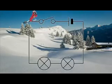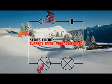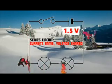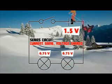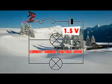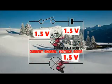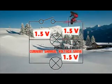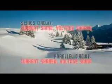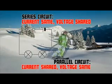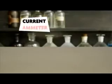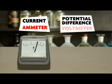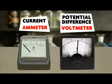In a series circuit, the potential difference is shared. So these two identical lamps share the 1.5 volts from the cell, half each. But in this parallel circuit, both bulbs have the full potential difference across them. So opposite things happen in series and parallel circuits.